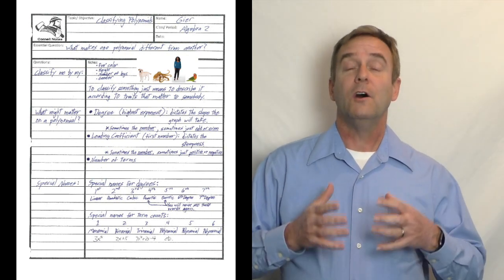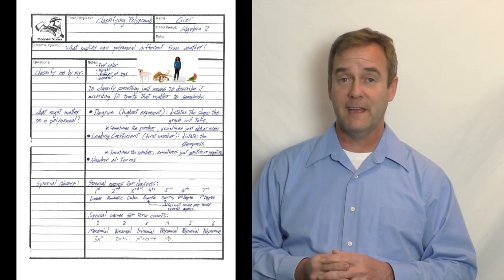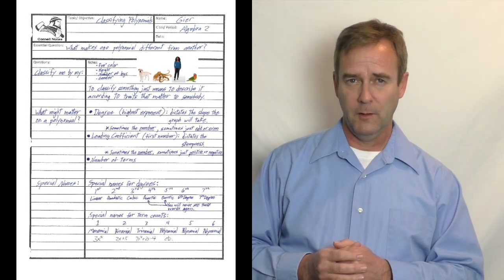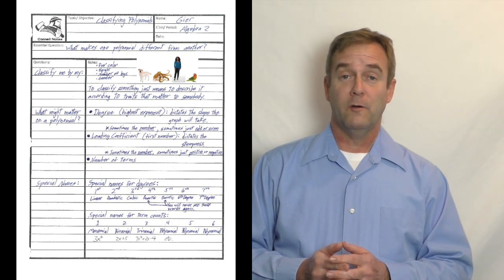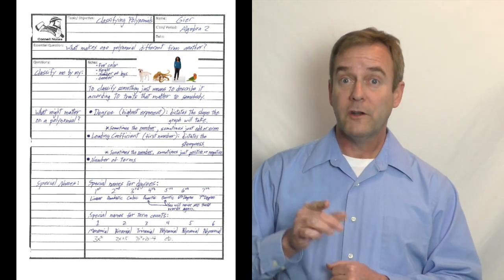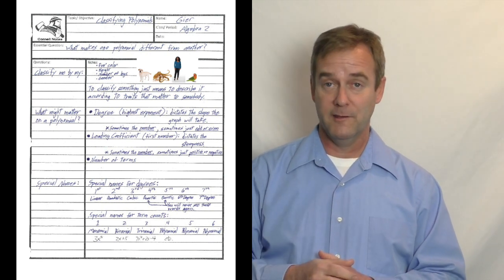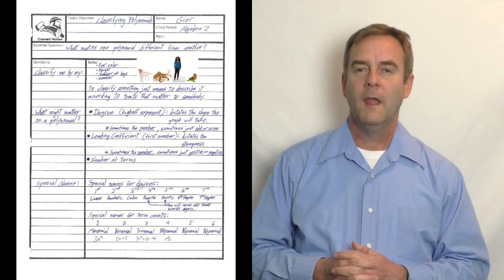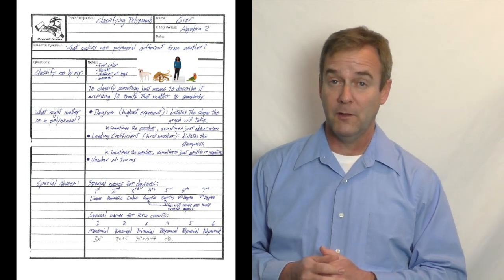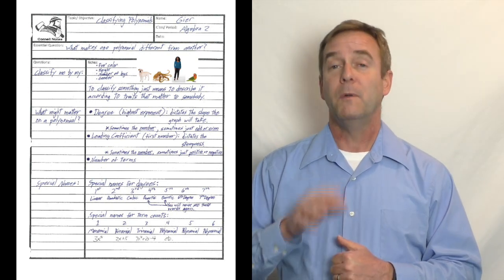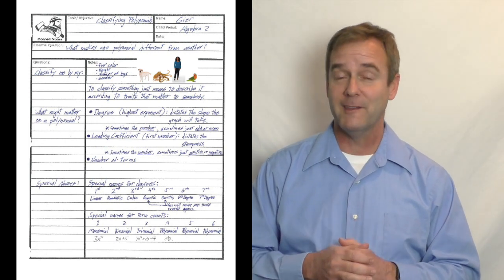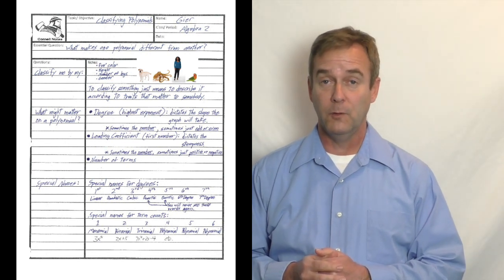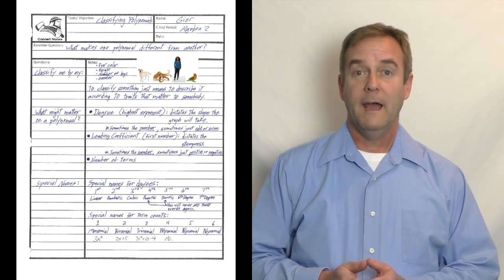For polynomials, we take the term with the highest degree and that becomes the degree of the polynomial. The degree ultimately determines what shape the polynomial will take on a graph. The next thing we care about is the leading coefficient — the number in front of the highest-degree term. It determines how steep the polynomial will be, and whether it goes up (positive) or down (negative) on the graph.